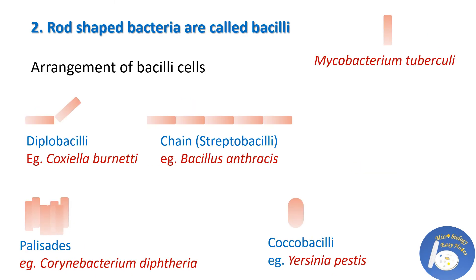The next shape is rod-shaped bacteria, or Bacilli-shaped bacteria. When bacteria look like a rod shape, they are called Bacilli bacteria. For example, Mycobacterium tuberculosis. Bacilli bacteria also have different kinds of cell arrangements. The first arrangement is Diplobacilli — short rod-shaped bacteria that occur in pairs, with two individual bacilli present side by side. An example is Coxiella burnetii, which is responsible for Q fever.